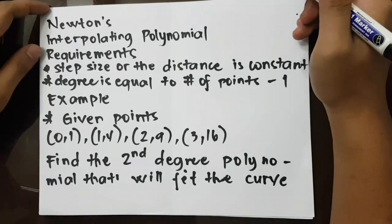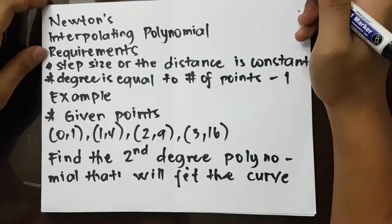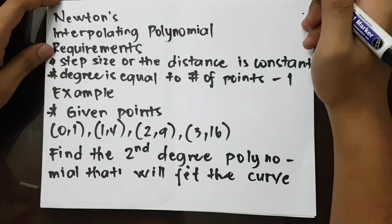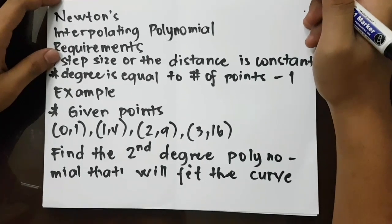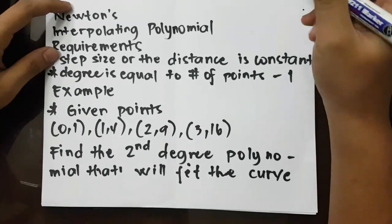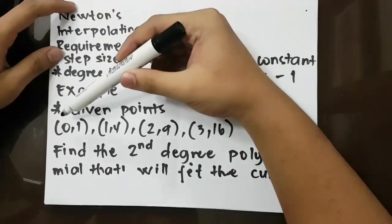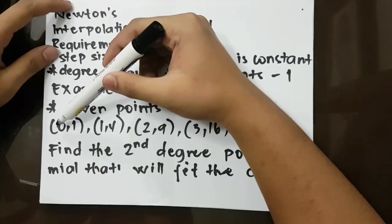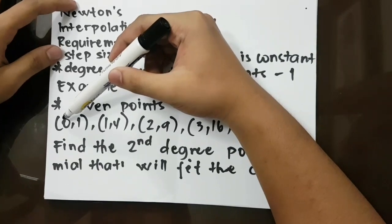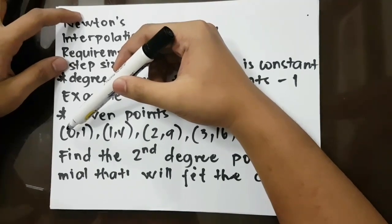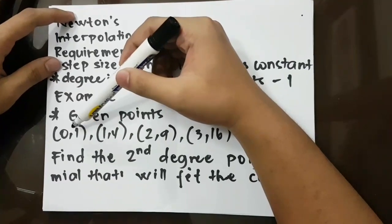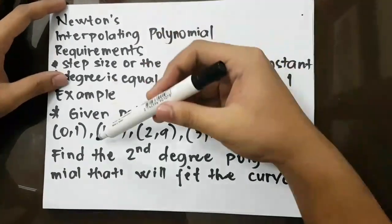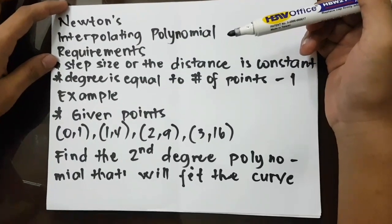Here is an example of Newton's Interpolating Polynomial. Given the points (0, 1), (1, 4), (2, 9), and (3, 16) — where the first value is the abscissa (x-axis) and the second is the ordinate (y-axis) in the Cartesian plane — find the second degree polynomial that will fit the curve.